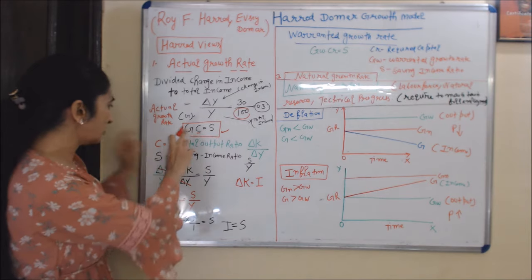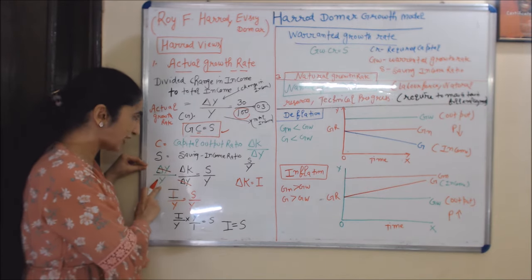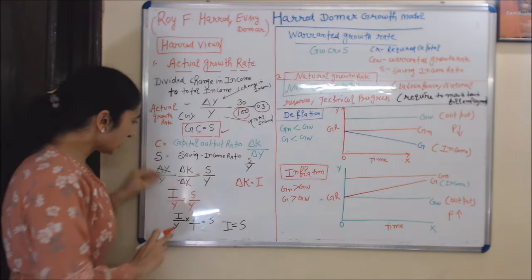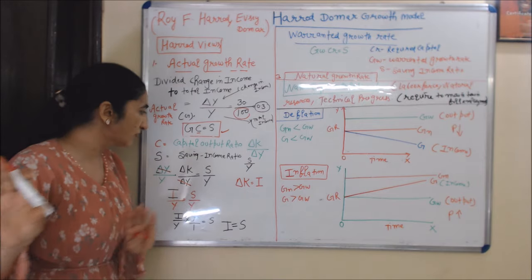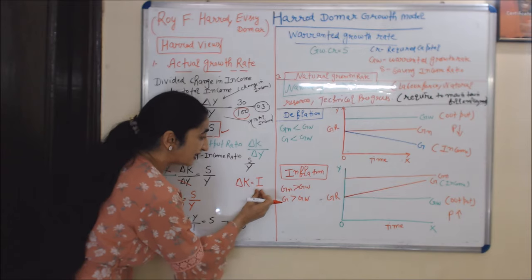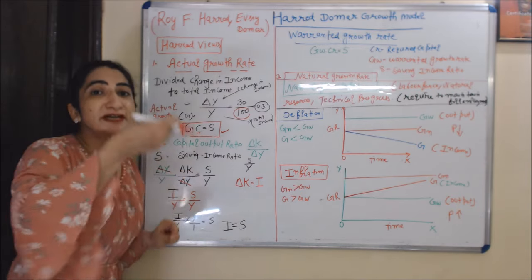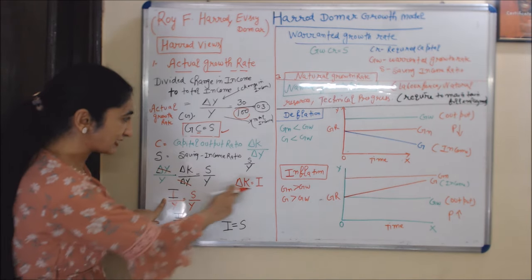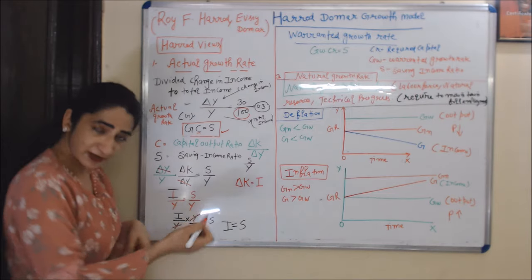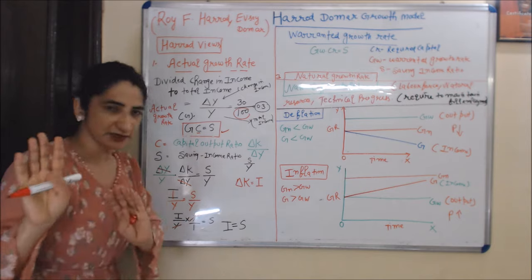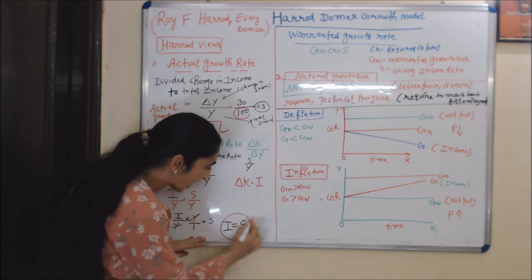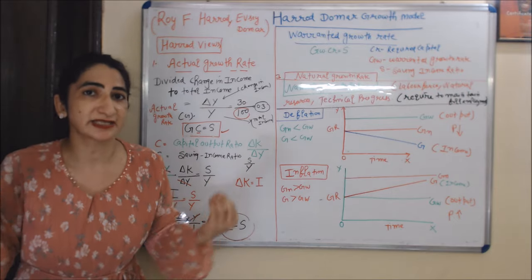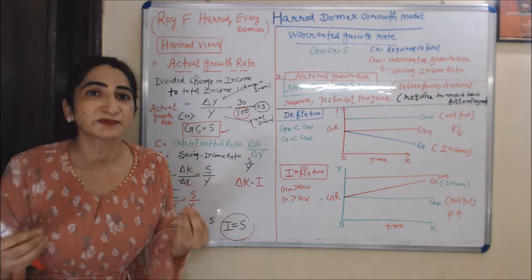Substituting the values: G is ΔY over Y, C is ΔK over ΔY, and S is S over Y. The ΔY terms cancel each other. We replace ΔK with I because change in capital equals investment. Then Y cancels, leaving I equal to S — confirming that investment must equal saving for equilibrium.